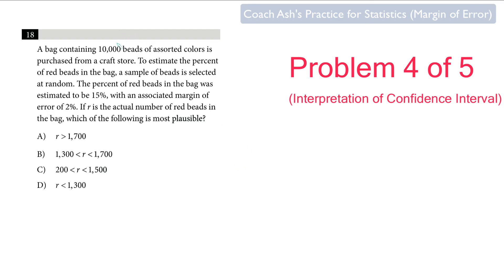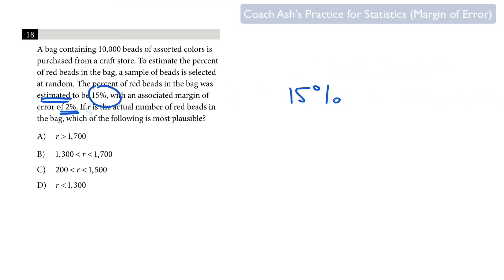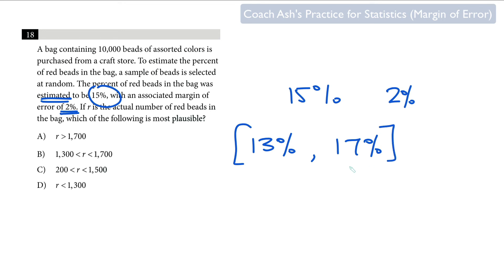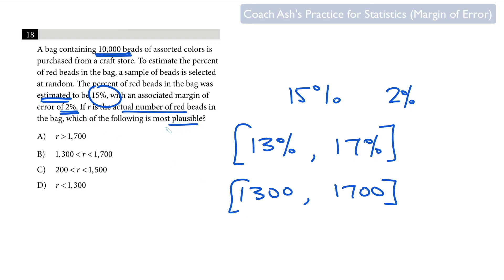Pause the video and try this problem. The estimate is 15% and the margin of error is 2%, so the confidence interval is 15 minus 2, which is 13%, to 15 plus 2, which is 17%. But we're also given a total of 10,000 beads. So 13% of 10,000 is 1,300, and 17% of 10,000 is 1,700. The most plausible number of beads is between 1,300 and 1,700, which is why B is the correct answer — it's between or greater than 1,300 and less than 1,700.